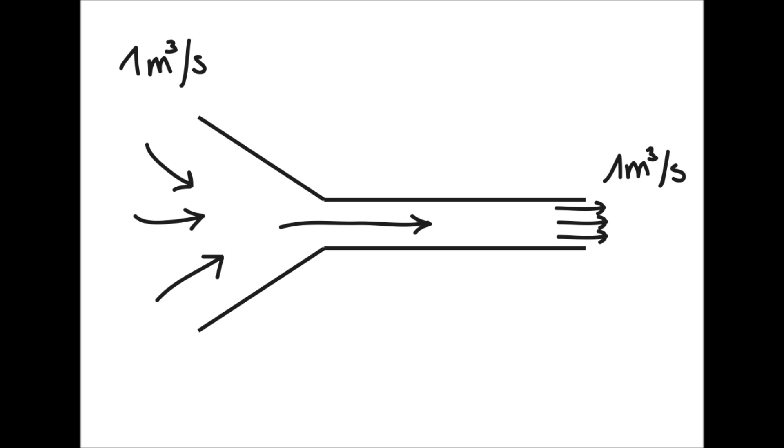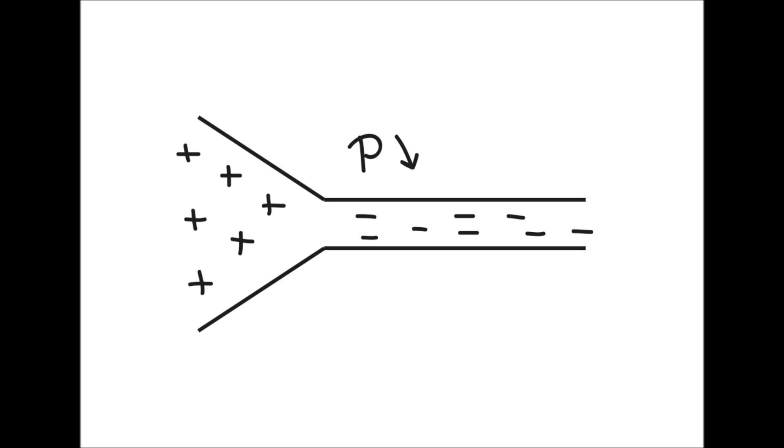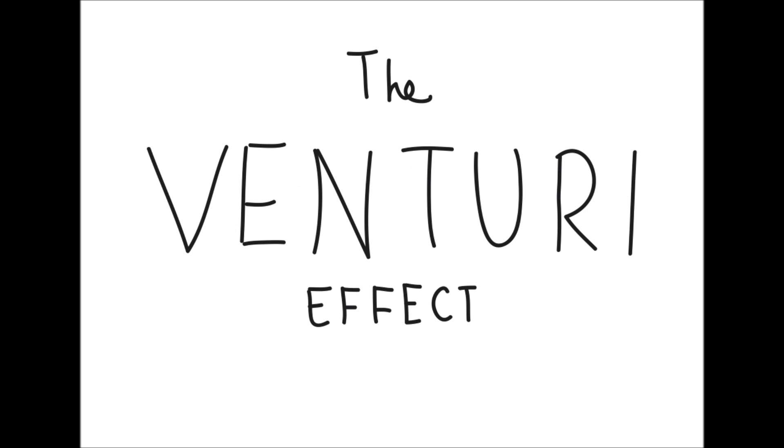And to keep this flow constant, the air has to accelerate in the narrow part of the tunnel. The consequence will be a decrease of pressure. The air will be less pressurized in the second part than in the first. This phenomenon is called the Venturi effect and this is what makes planes fly.